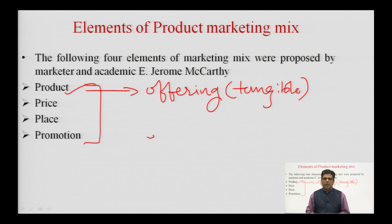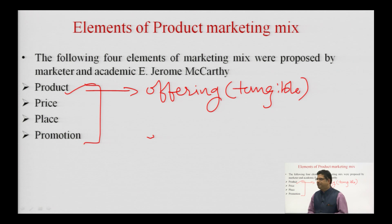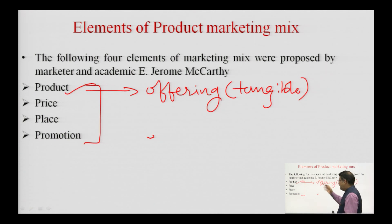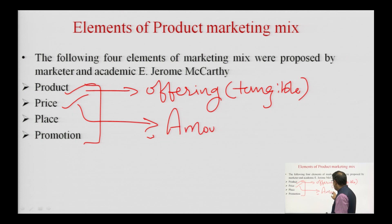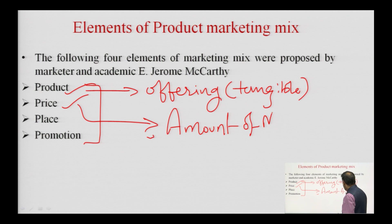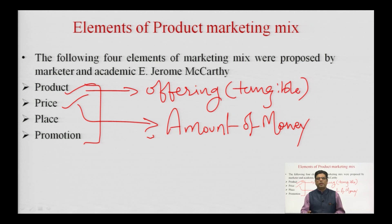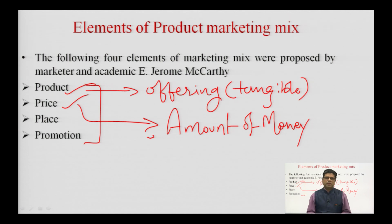My need of writing will be satisfied with the pen, my need of communicating with people will be satisfied through a mobile phone, and my need of computation and saving documents will be satisfied by a laptop. The next element of marketing mix in case of a product is price. Price is defined as the amount of money paid by the consumer in order to acquire the product — for example, paying 10, 15, or 50 rupees for a pen.